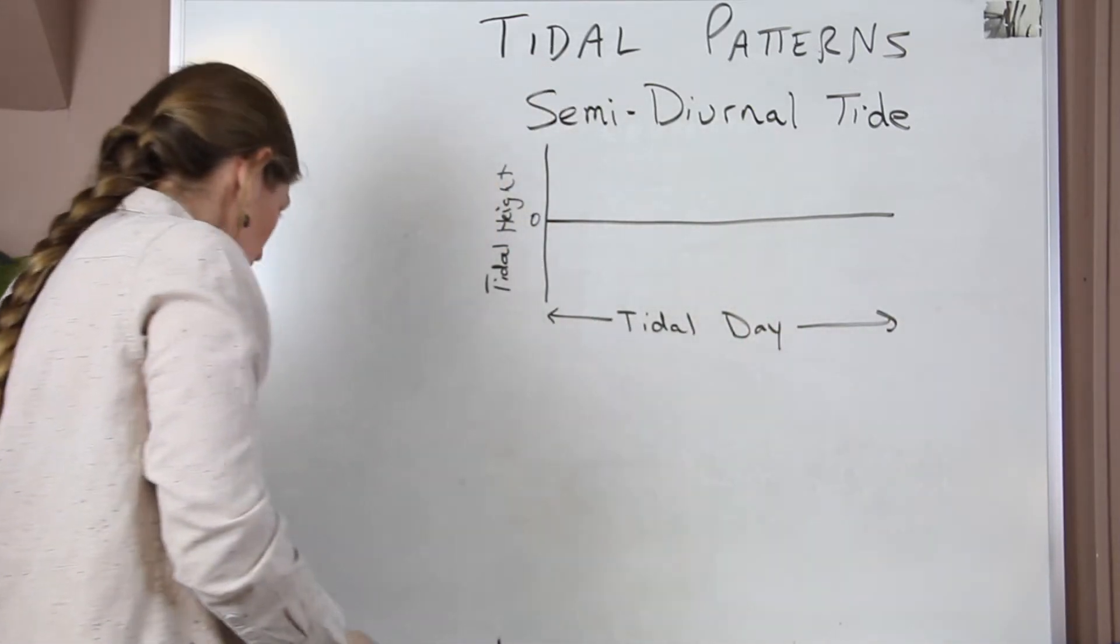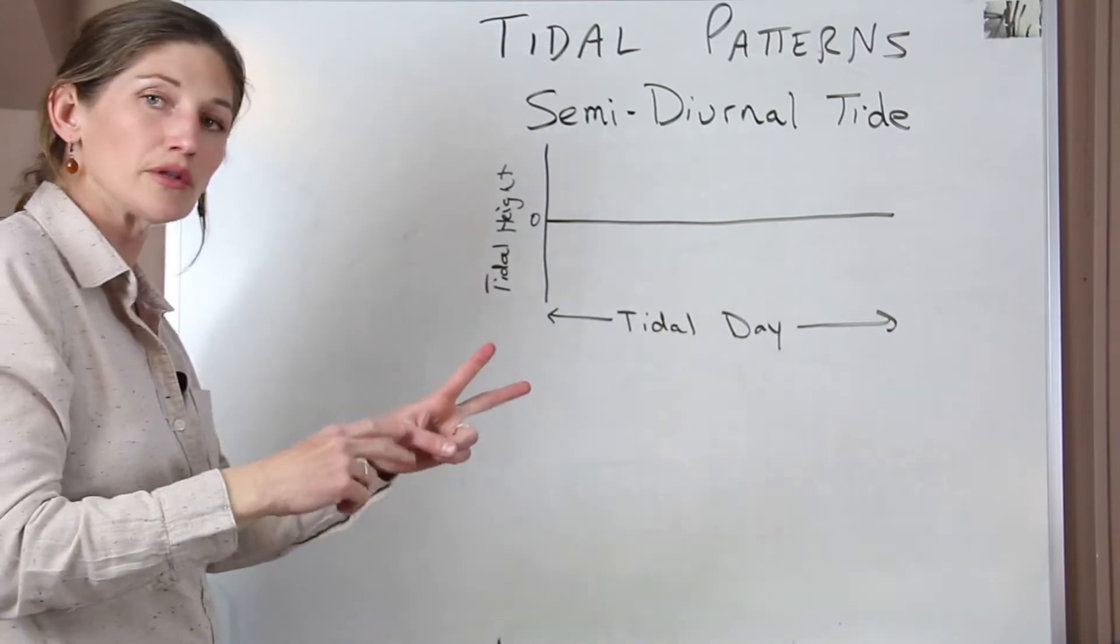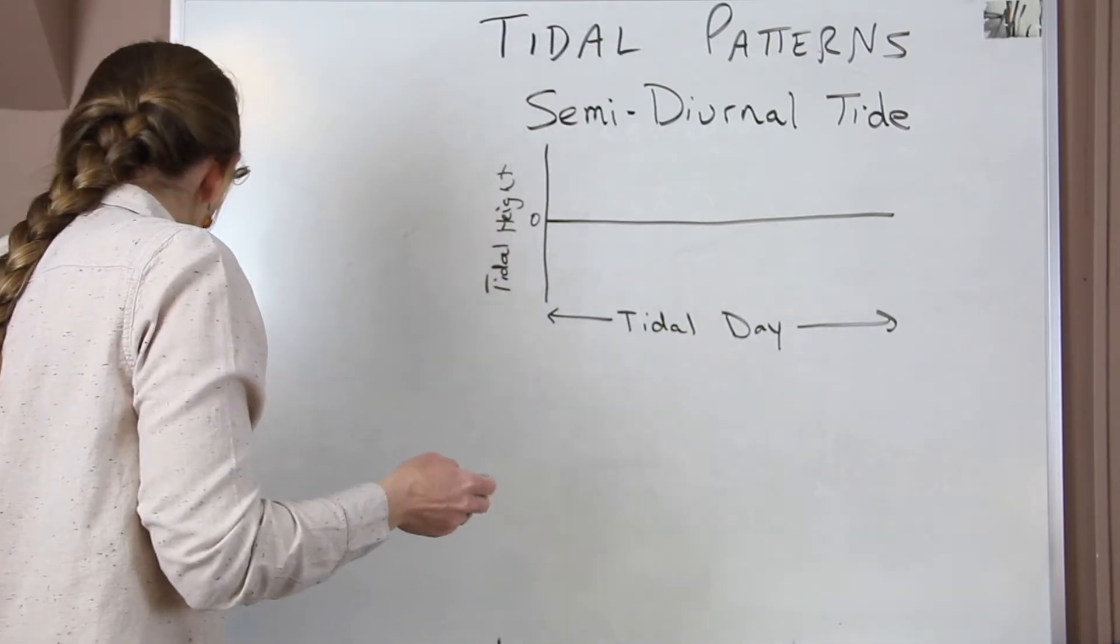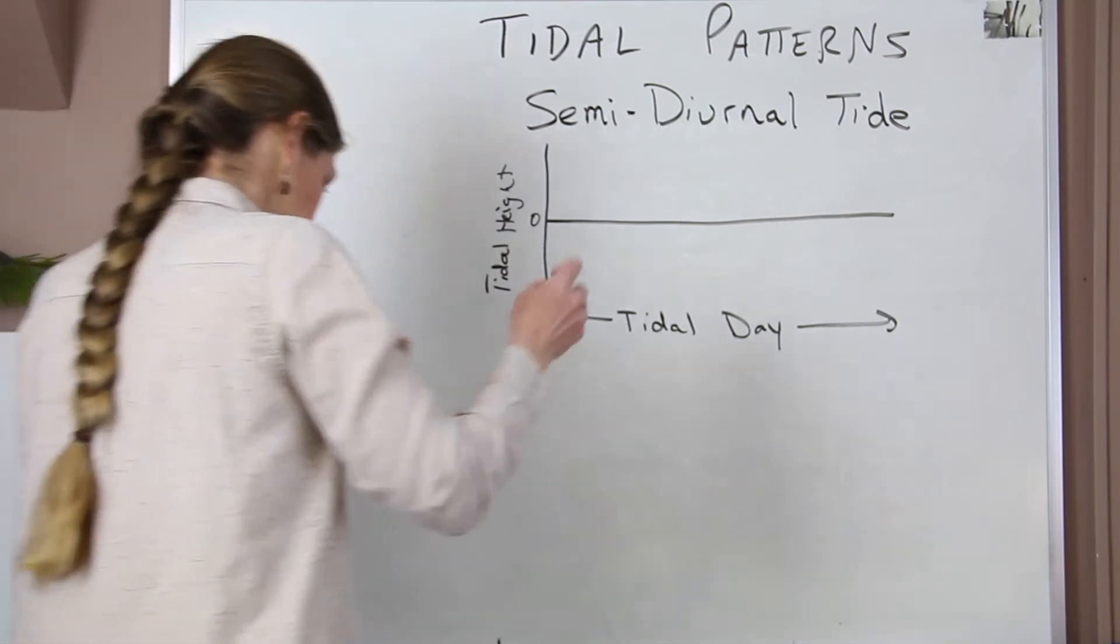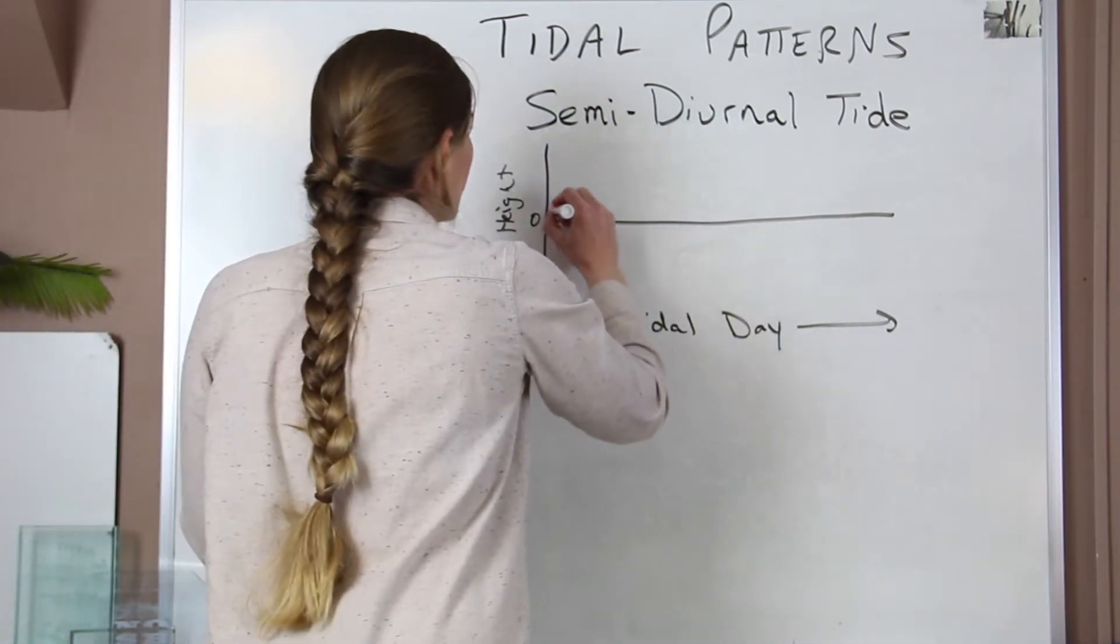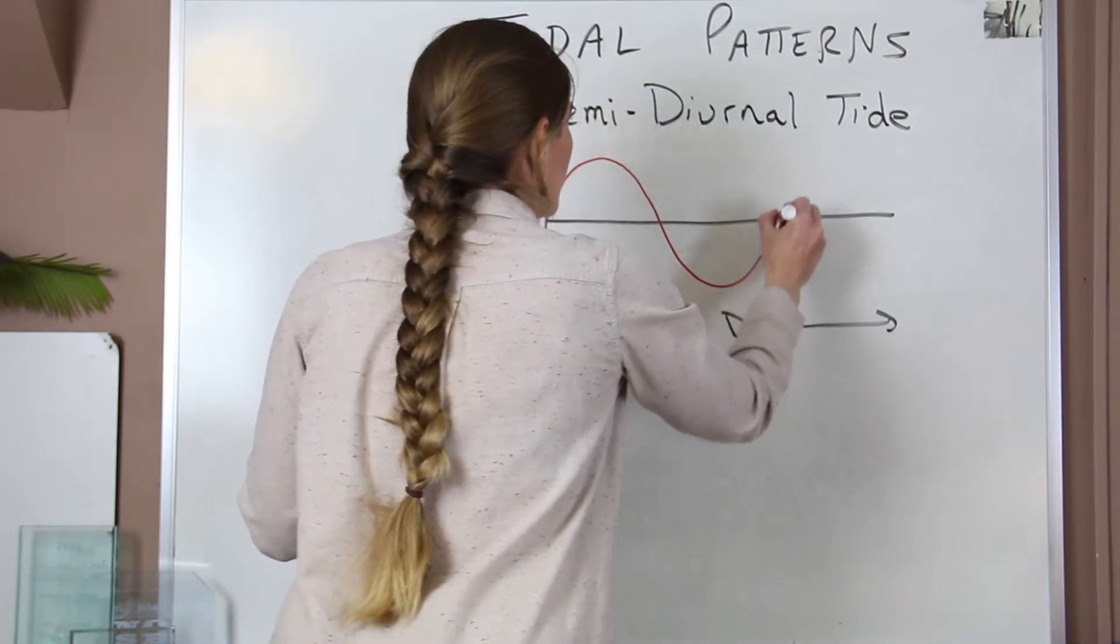Okay, so during a diurnal tide what we see is two highs and two low tides of equal sizes during that lunar day. So what this will look like is we have a high and then a low and then a high.